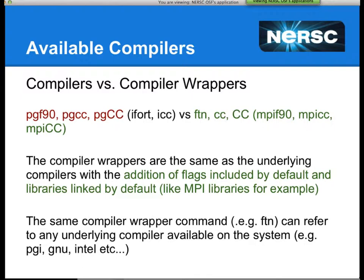One tricky part is that the same compiler command, for example FTN, can actually refer to a number of different underlying compilers depending on which programming environment module you have loaded. By default when you log into Hopper you have the PGI programming environment loaded, so you'll see PRG_ENV_PGI loaded. But if you want to use the GNU, Intel, or Cray compilers, you'd swap from that module to the GNU module. You'd still use the same compiler commands FTN, CC, and CC — but they now point internally to GNU, Intel, or Cray compilers under the hood. FTN and CC themselves are not real compilers; they just wrap whichever programming environment you have loaded.